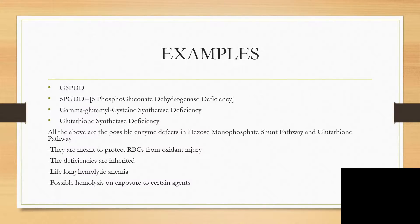There are examples of defects very similar to G6PD. Number one is glucose-6-phosphate dehydrogenase deficiency. Close to that is 6PGDD — 6-phosphogluconate dehydrogenase deficiency. We also have gamma-glutamylcysteine synthetase deficiency and glutathione synthetase deficiency. All of the above are possible enzyme defects found in the pentose monophosphate pathway and glutathione pathway.